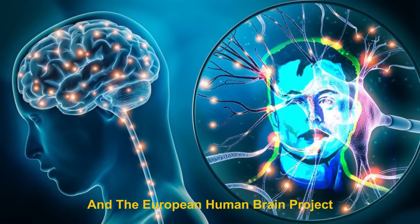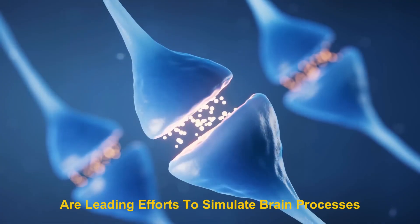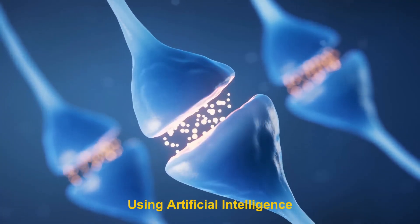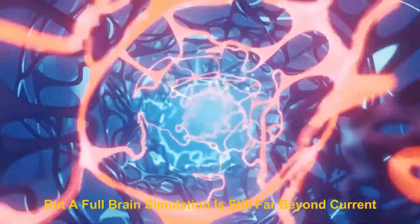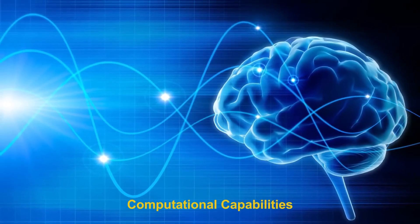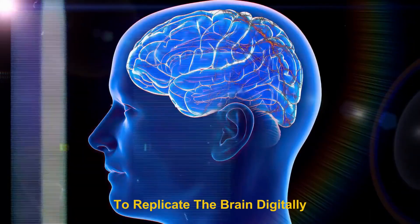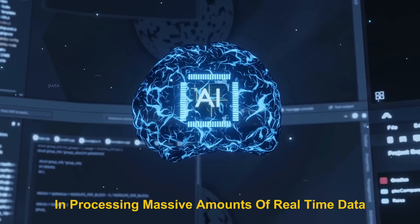However, even the best scans available today can only capture a fraction of the brain's complexity. The Blue Brain Project and the European Human Brain Project are leading efforts to simulate brain processes using artificial intelligence. Researchers have successfully simulated small sections of the brain, but a full brain simulation is still far beyond current computational capabilities. To replicate the brain digitally, we would need quantum-level precision in processing massive amounts of real-time data.